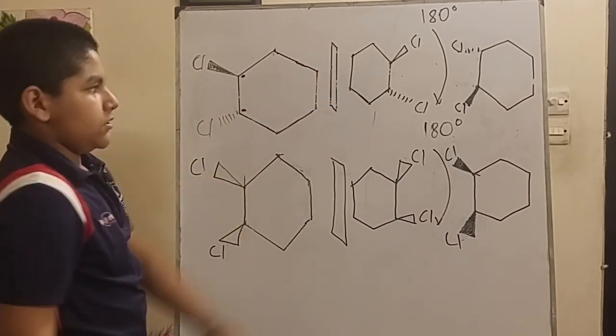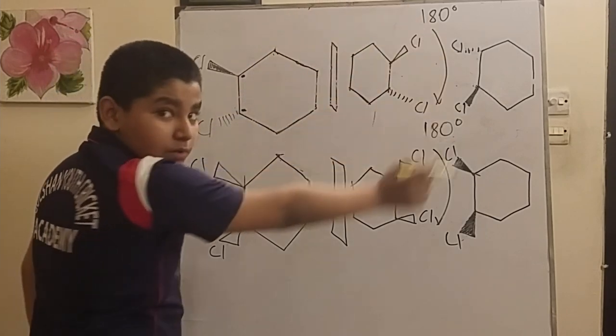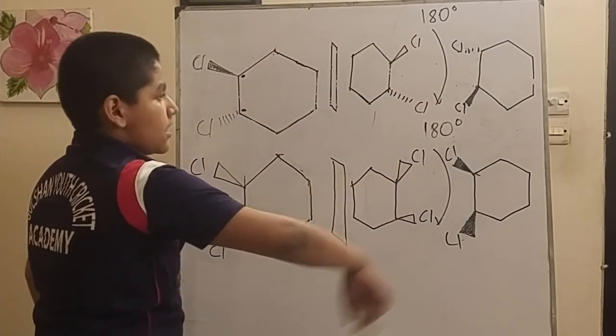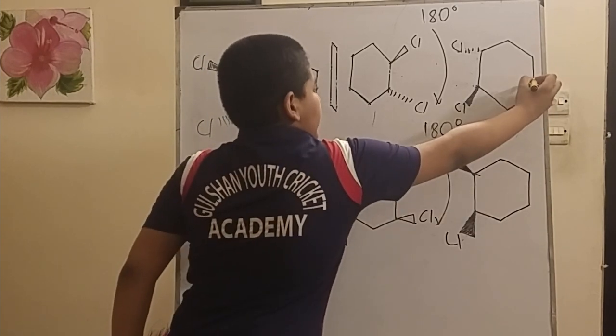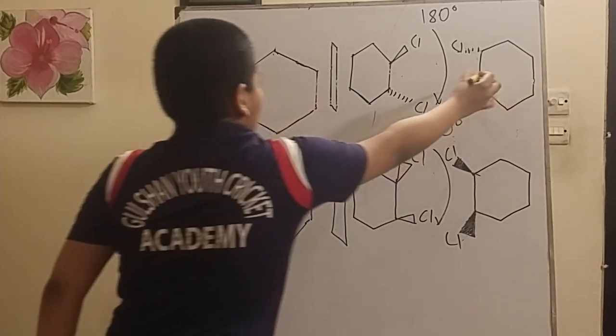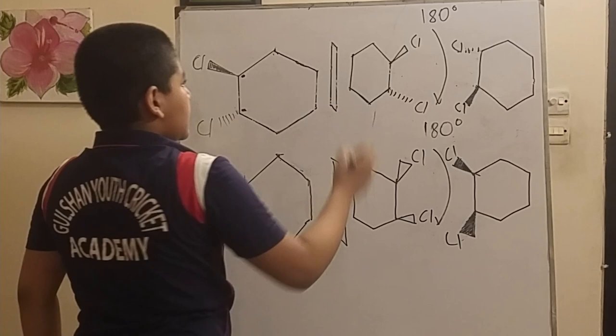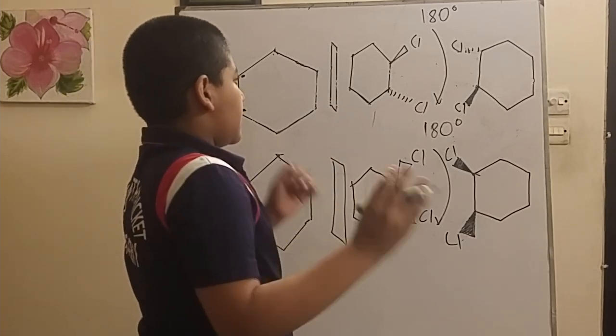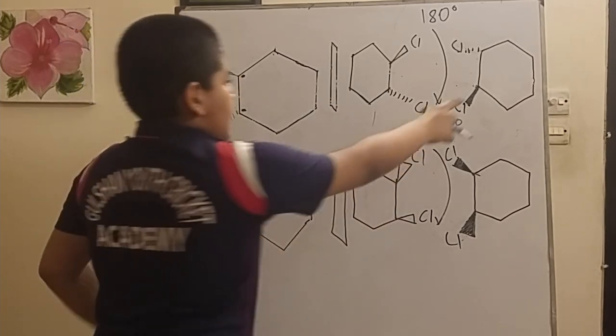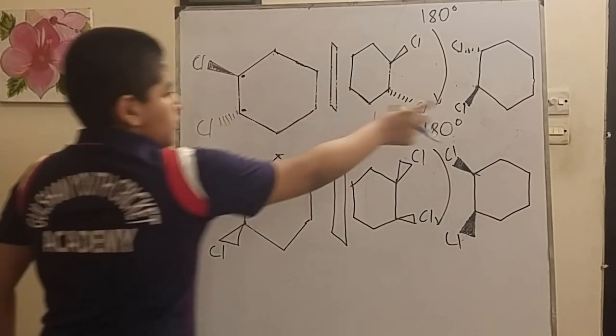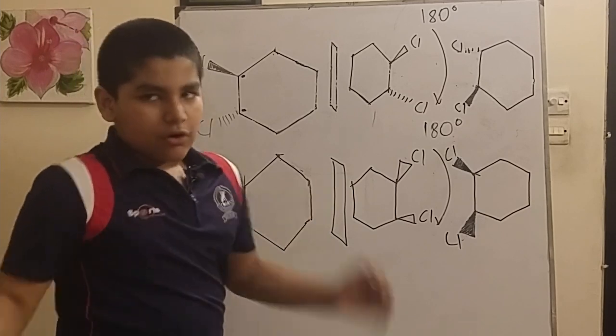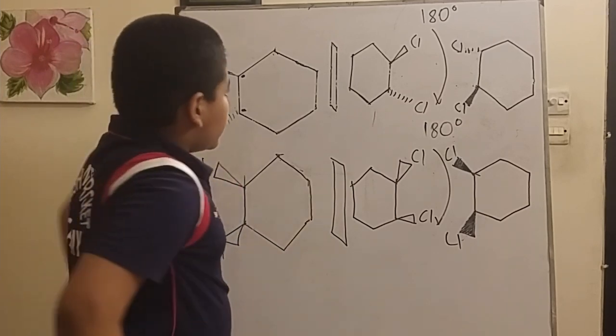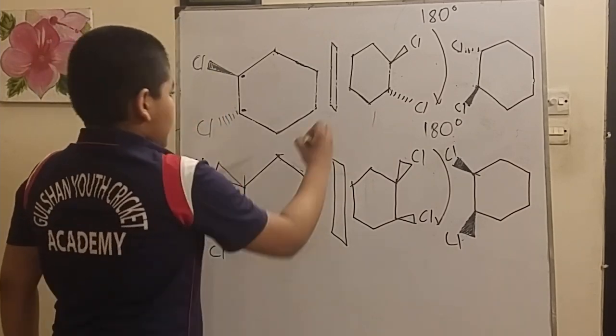If we take the mirror image of this molecule and rotate it 180 degrees, we get this molecule. If you try to overlap these two, they won't overlap properly. The dash will go to the wedge and the wedge will go to the dash, so this is enantiomers.